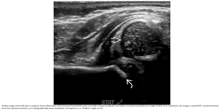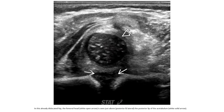Radiographically, the shallow acetabular roof appears as a shallow angle. In this already dislocated hip, the femoral head is seen just above the posterior lip of the acetabulum.